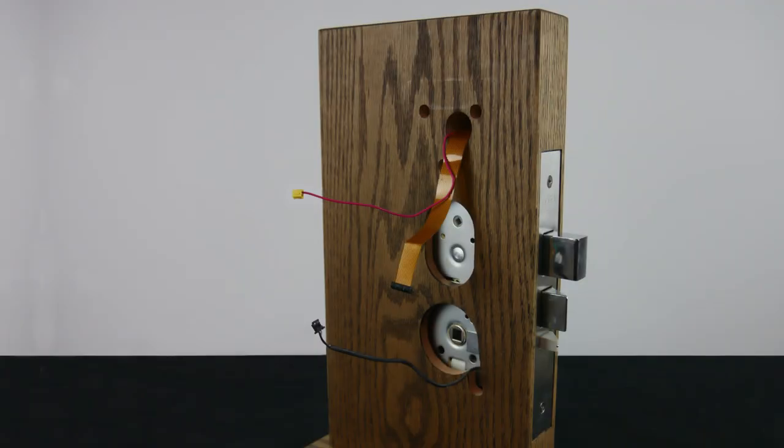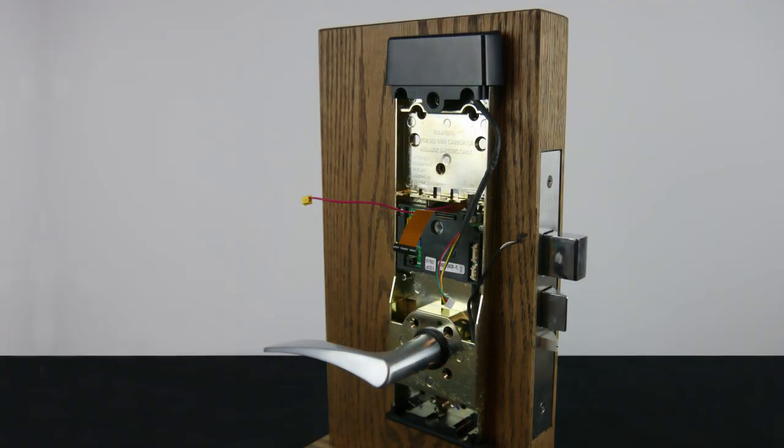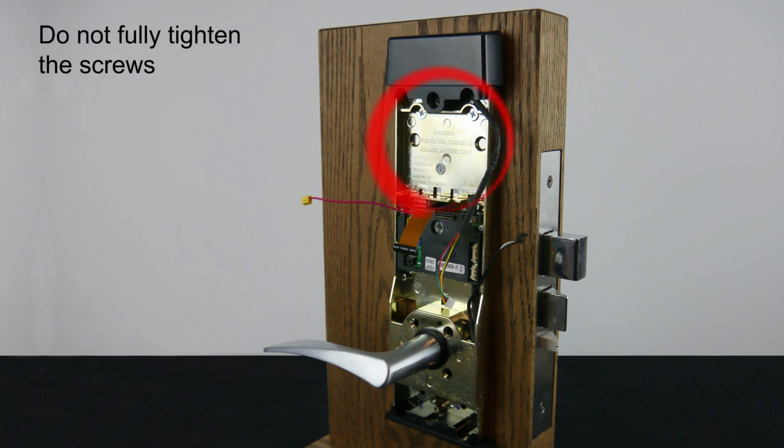Position the inside trim on the inside of the door and secure the reader assembly to the inside trim using three screws. At this time, do not fully tighten the screws.